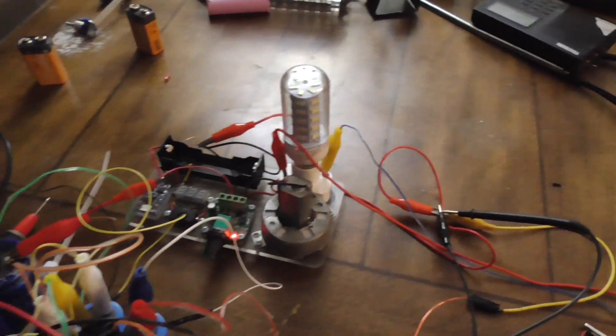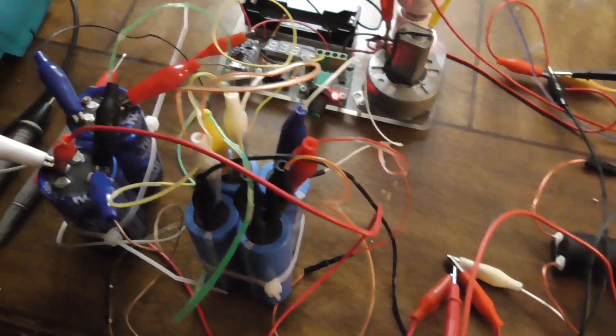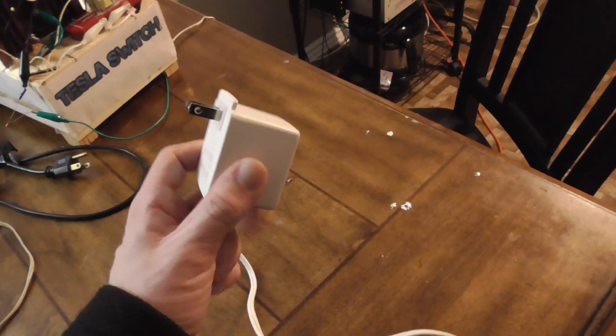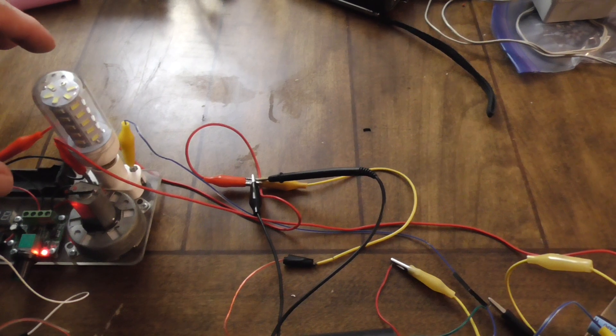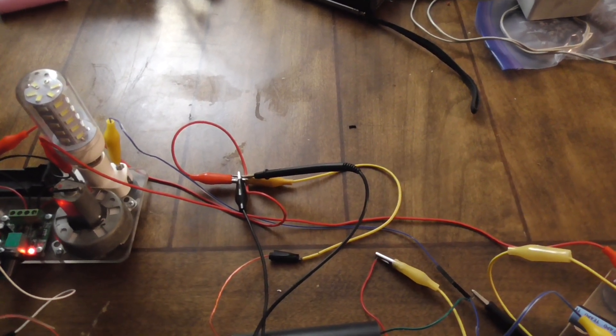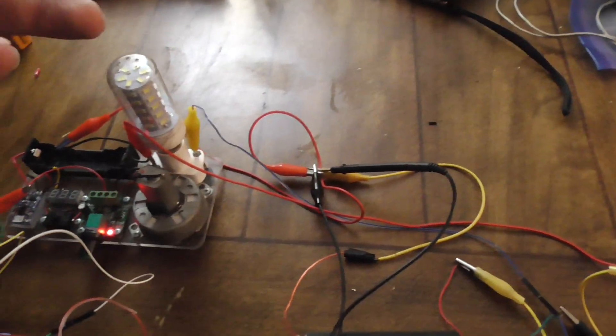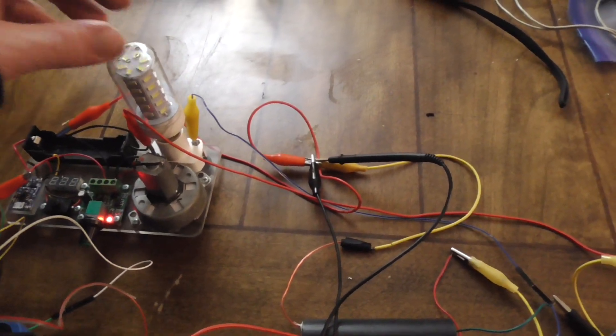Once you charge the capacitor bank and you build up enough of a charge, you can unplug this, and this keeps going. The generator will give us our equivalent of 110 AC with current, with actual wattage that we could use.